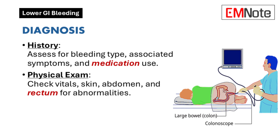Skin pallor, signs of liver disease, and manifestations of coagulopathy such as petechiae or purpura should be noted. Abdominal tenderness, masses, or signs of peritonitis may guide further investigation. A rectal examination should assess for gross blood, masses, or external hemorrhoids. Bedside anoscopy may help identify hemorrhoidal bleeding.